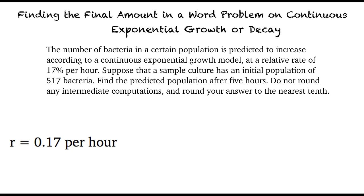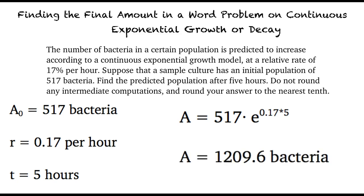The initial population is A sub 0 equals 517 bacteria. And we are asked to find the predicted population after t equals 5 hours of growth. Substituting the given values into our equation yields A equals 517e raised to the 0.17 times 5 power, which simplifies to 1209.6 bacteria after rounding to the nearest tenth.